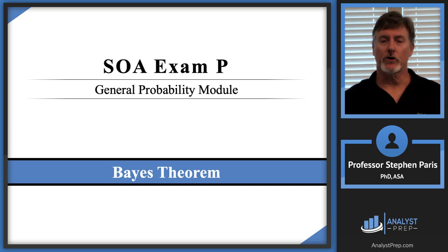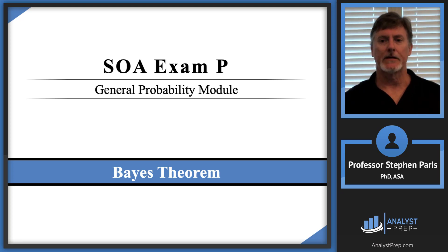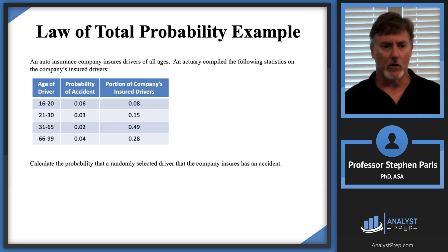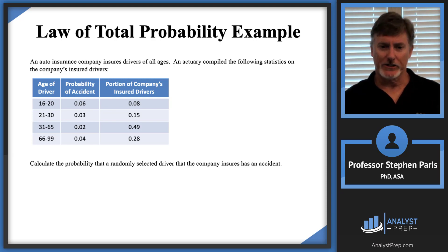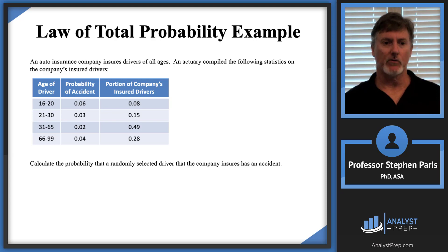Hi, in this video we're going to talk about Bayes Theorem. Bayes Theorem is kind of an extension of the law of total probability. So let's start with a law of total probability example. We've got an auto insurance company that insures drivers of all ages, and an actuary compiled the following statistics on the company's insured drivers, given to us in the form of a table.